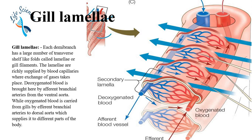The deoxygenated blood is brought here by the afferent branchial arteries. These are the afferent blood vessels.